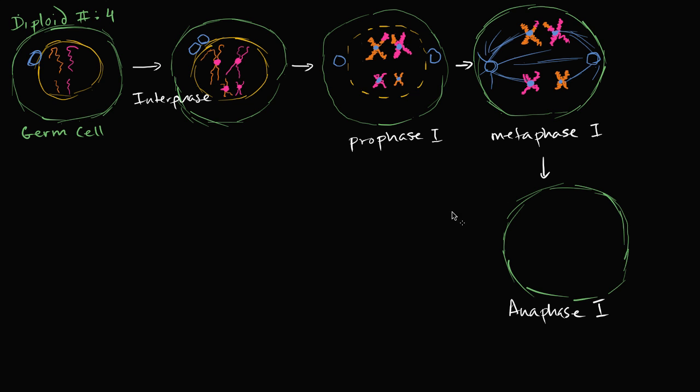Except for one significant difference, and this is actually a very significant difference. In mitosis, the sister chromatids get pulled apart to become two daughter chromosomes. That does not happen in anaphase one. In anaphase one, the sister chromatids stay together. It's the homologous pairs that get pulled apart.